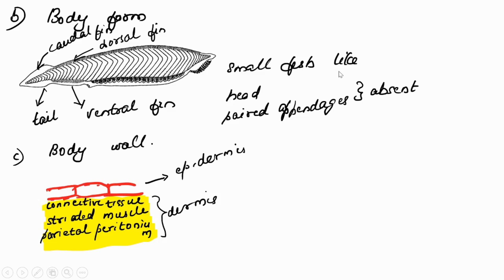Regarding body form: it is a small fish-like organism. Head and paired appendages are totally absent. Instead, they have a caudal fin towards the posterior end, a dorsal fin, a tail, and a ventral fin. So there are three types of fins: caudal fin, dorsal fin, and ventral fin.